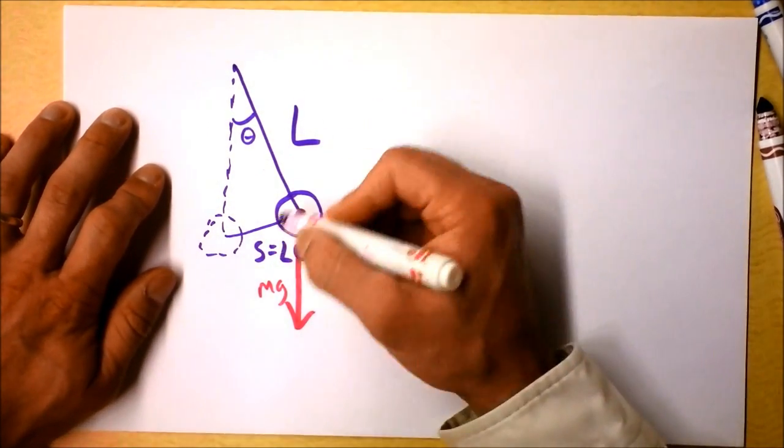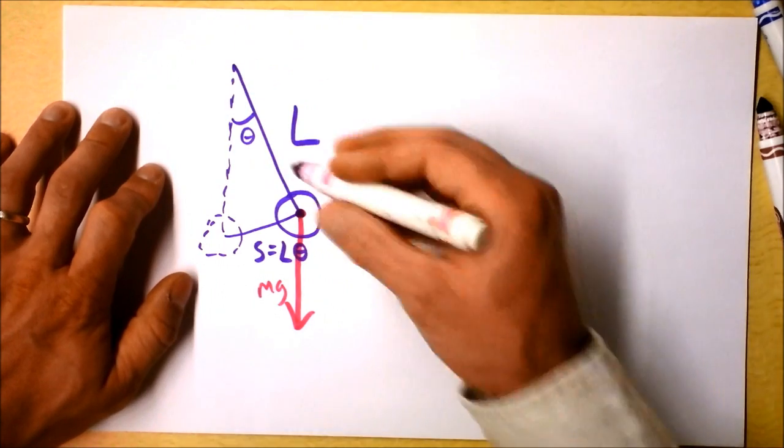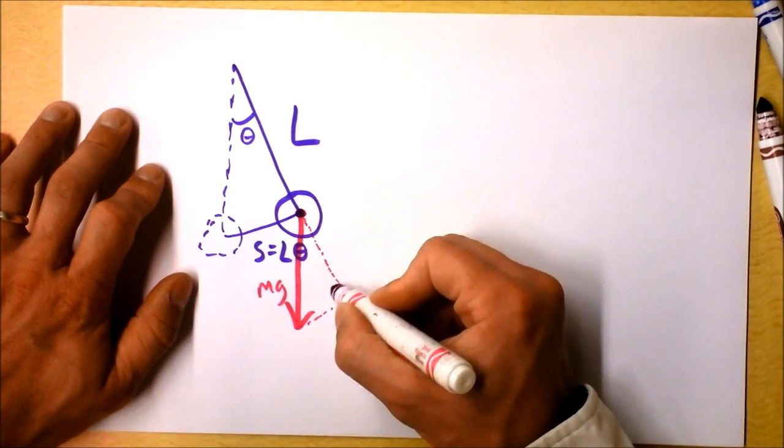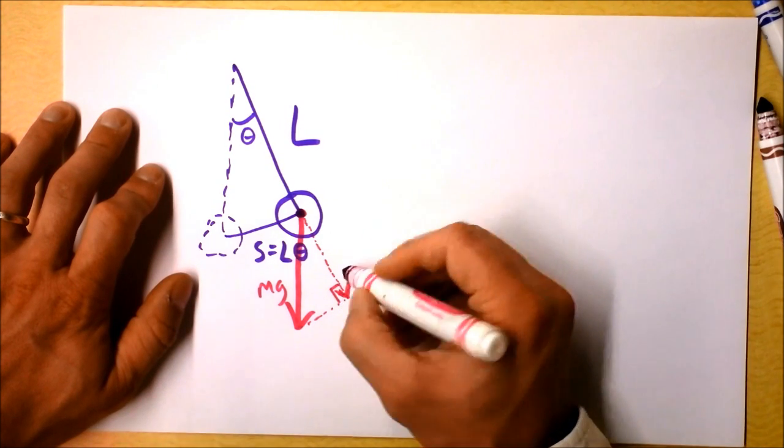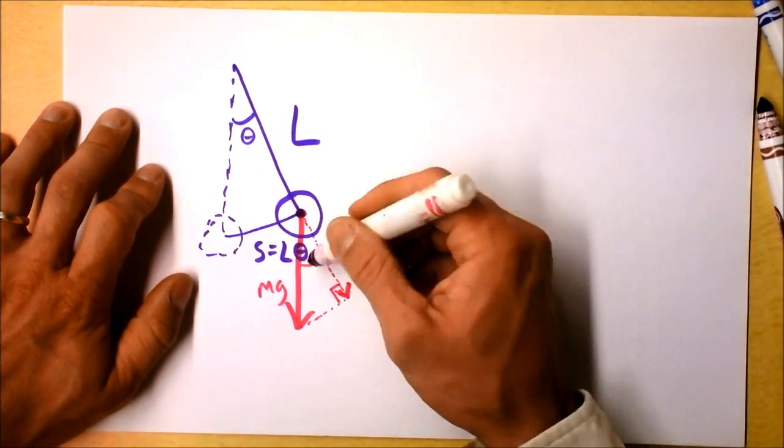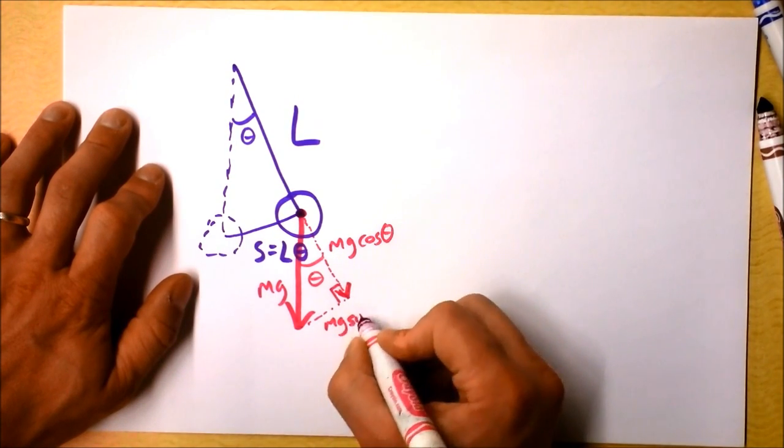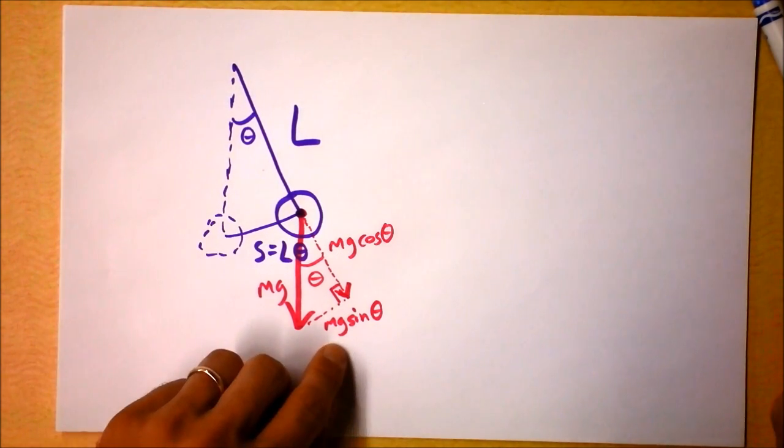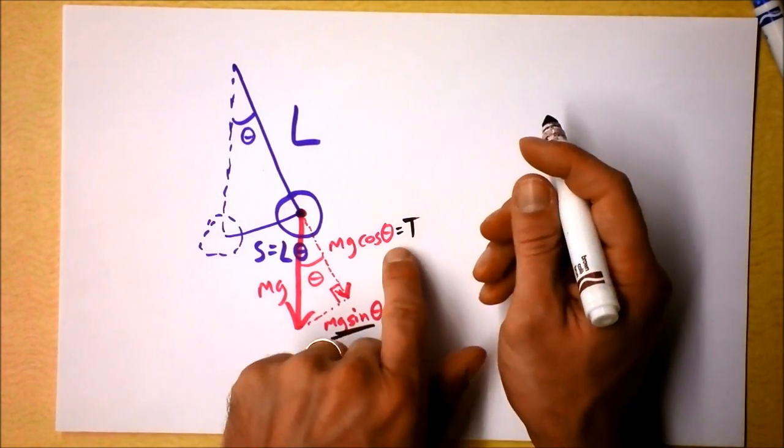So I want to look at this force M times G and figure out how much of it is restoring force, and how much of it is just providing force that will cancel this tension here. So I'm going to look at the tension in the rope, and I'm going to resolve this force, this weight, in terms of the tension. This component of the weight is canceling tension. This is M times G times cosine theta. And this sucker right here is M times G times sine theta. Can you tell me which component of the force is providing the restoring force in this situation? Our restoring force right here is M times G times sine of theta, very good.